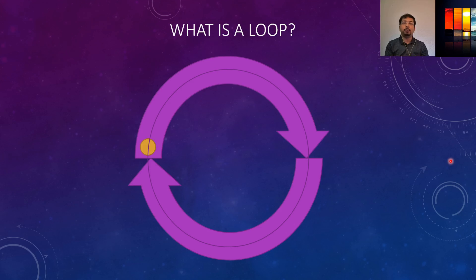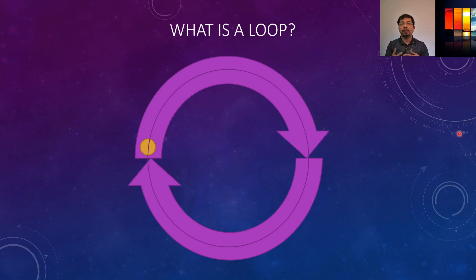So what is a loop? In general, a loop is something that starts from a position and after circulating a path it ends up at the same position. As a programmer, we can use a loop in a programming environment so that a bunch of commands or codes can be executed for a certain number of times or until a certain condition is met.